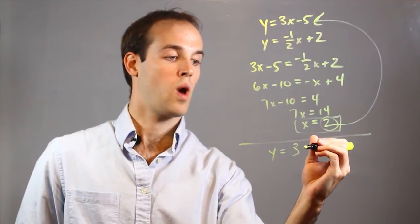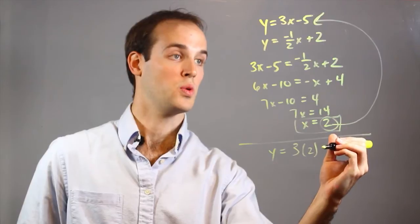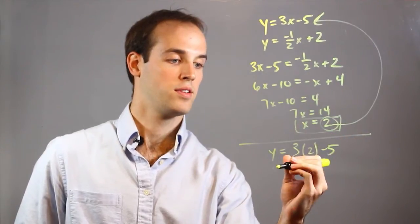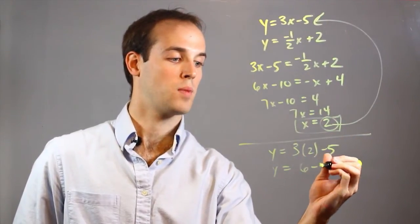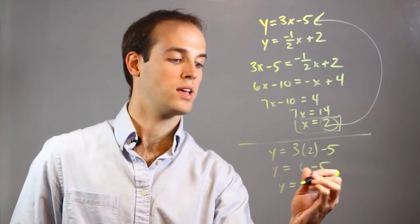So I'll pick the first one. y equals 3 times the quantity 2 minus 5. y equals 6 minus 5. y equals 1.